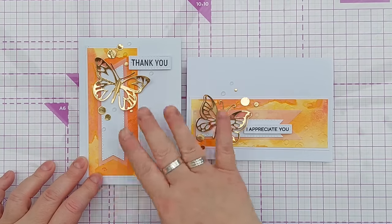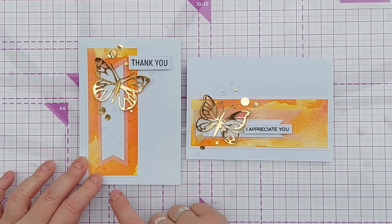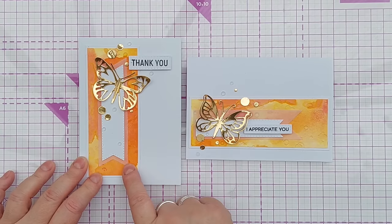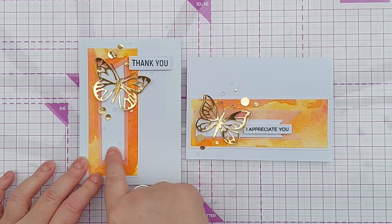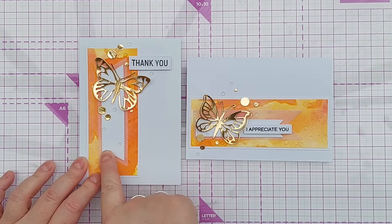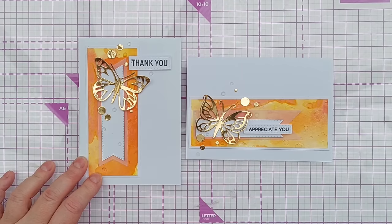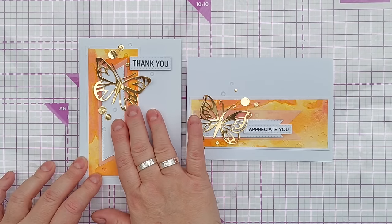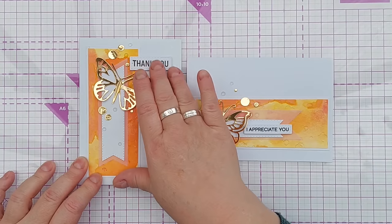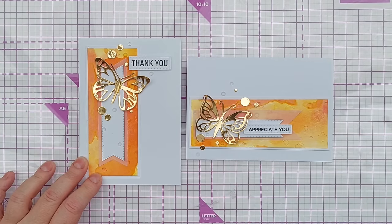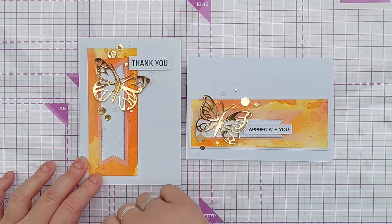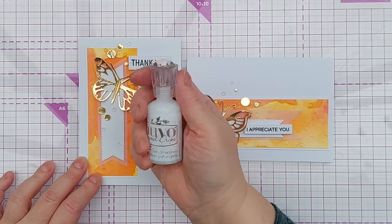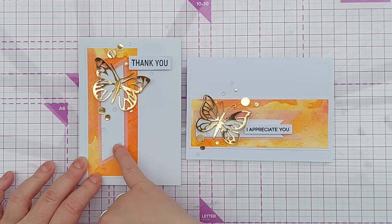To tone down the background even further I layered on a double fishtailed banner in vellum and then a smaller one in white cardstock and that again introduces a bit more white space. And then I added a gold foiled butterfly and a thank you.